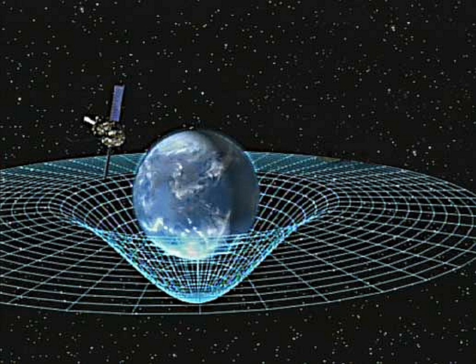Spacetime Diagram of an Accelerating Observer in Special Relativity: The momentarily co-moving inertial frames along the world line of a rapidly accelerating observer. The vertical direction indicates time, while the horizontal indicates distance, the dashed line is the spacetime trajectory of the observer. The small dots are specific events in spacetime. If one imagines these events to be the flashing of a light, then the events that pass the two diagonal lines in the bottom half of the image are the events visible to the observer. The slope of the world line gives the relative velocity to the observer. Note how the momentarily co-moving inertial frame changes when the observer accelerates.